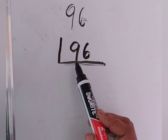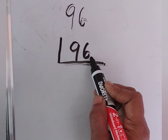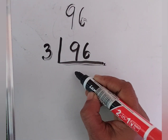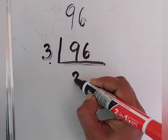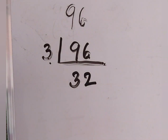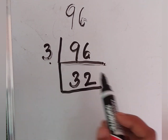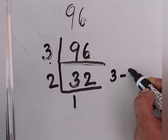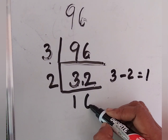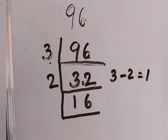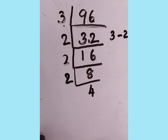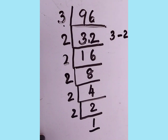Coming to the next question — 96. We can start dividing using 3 or 2; I have shown it in both ways. First, let us start with 3. 3 × 3 = 9, so write 3 here. Then 3 × 2 = 6. Next, for 32, we will not get it in 3's table, so taking 2's table: 2 × 1 = 2. 3 minus 2 is 1; that 1 is kept with the next digit, making it 12. So 2 × 6 = 12. Taking 16: 2 × 8 = 16, then 2 × 4 = 8, then 2 × 2 = 4, then 2 × 1 = 2. Our division is over.